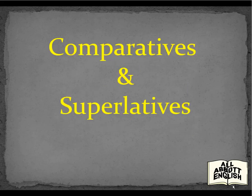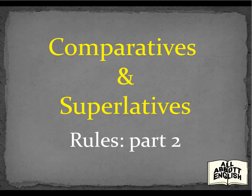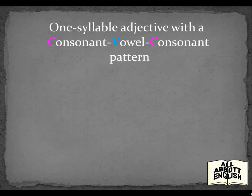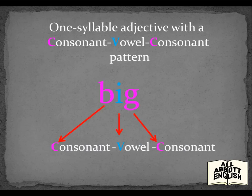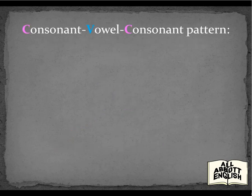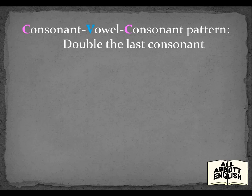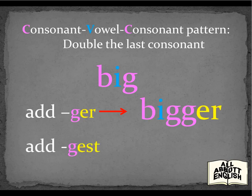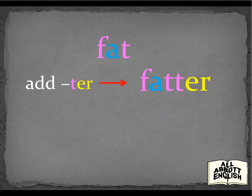Comparatives and Superlatives Rules Part 2. One Syllable Adjective with a Consonant-Vowel-Consonant pattern: Double the Last Consonant. Big — double the G — Bigger — Biggest. Fat — double the T — Fatter — Fattest.